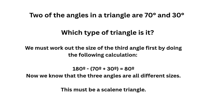Next question: two of the angles in a triangle are 70 degrees and 30 degrees. Which type of triangle is it? We need to work out the size of the third angle. 70 plus 30 equals 100, and 180 minus 100 is 80. So the three angles are 70 degrees, 30 degrees, and 80 degrees — all different sizes. So this must be a scalene triangle.